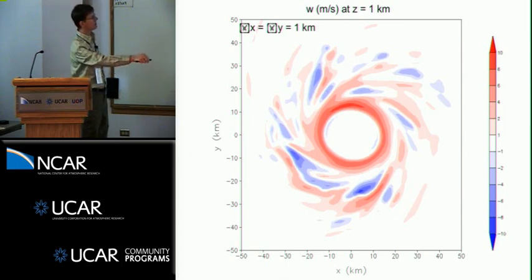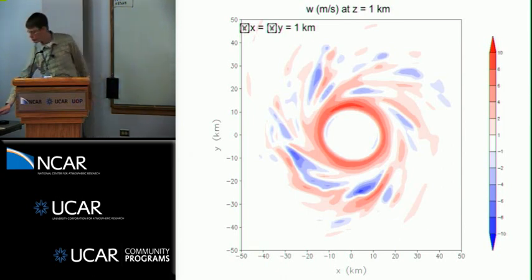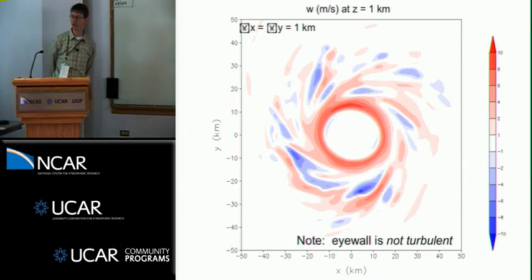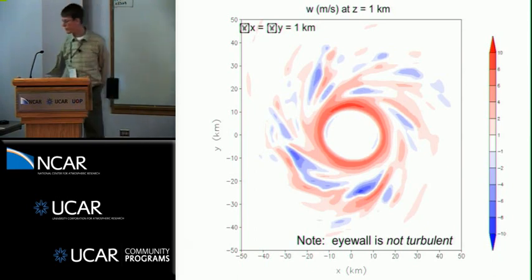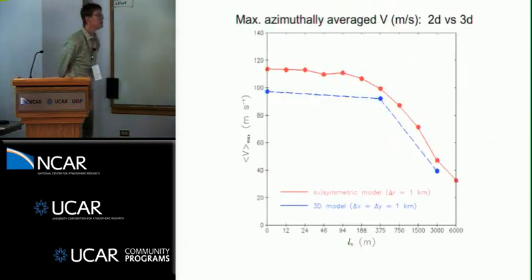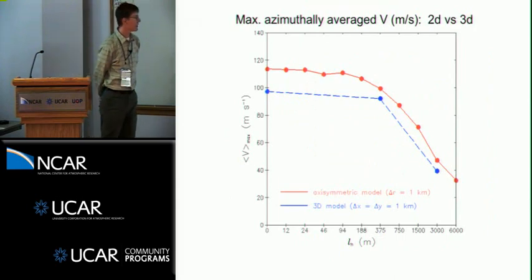Here's what the vertical velocity looks like from that simulation with one kilometer grid spacing. The reds are up, so notice you have up everywhere, it's a very smooth eyewall, and so the eyewall is not turbulent. This is even with one kilometer horizontal grid spacing, and so this tells you that you even have to parameterize turbulence in a three-dimensional model.